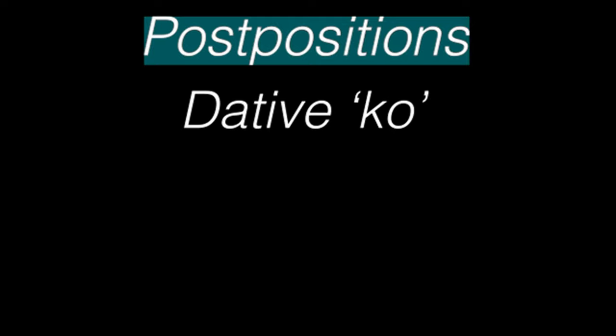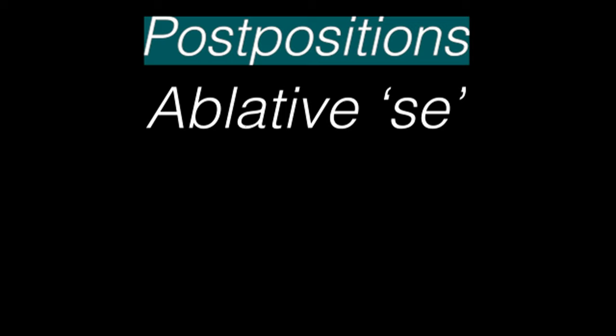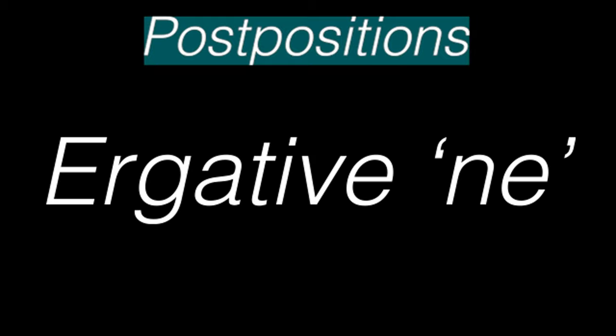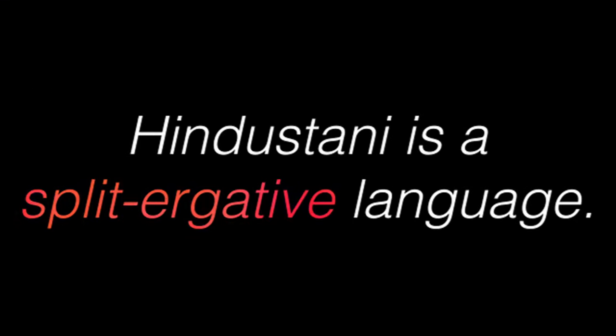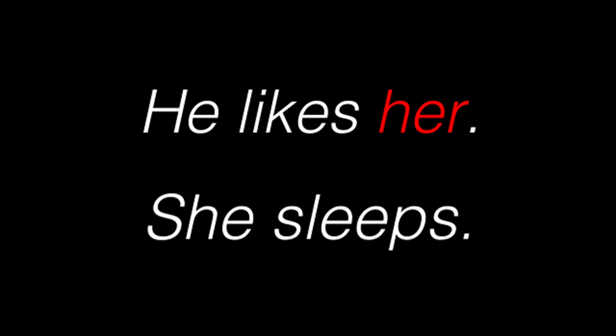Ko is the dative marker, as in usko de do, meaning give it to him. Se has a lot of meanings but it's mostly used as an ablative marker, as in udhar se, meaning from there. Then there's the ergative marker ne. In the shortest possible way I can explain, Hindustani is a split ergative language. What that means is that the object of a transitive verb is treated the same as the subject of an intransitive verb — it's basically like saying her likes she.